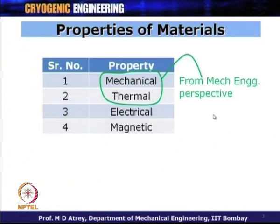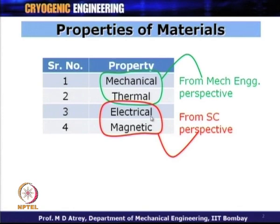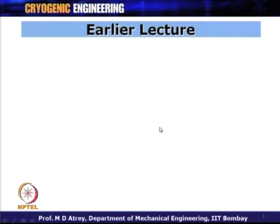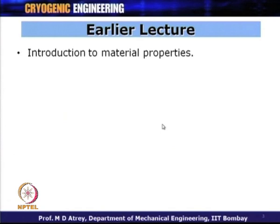The first two properties — mechanical and thermal — are very important for students of mechanical engineering. Electrical properties are also important, but electrical and magnetic properties will be covered under the section of superconductivity, because superconductivity is a very important aspect of cryogenics. In fact, cryogenics is the cause and superconductivity is the effect. In the last lecture, I emphasized more on thermal properties, and before that lecture I had talked about mechanical properties.